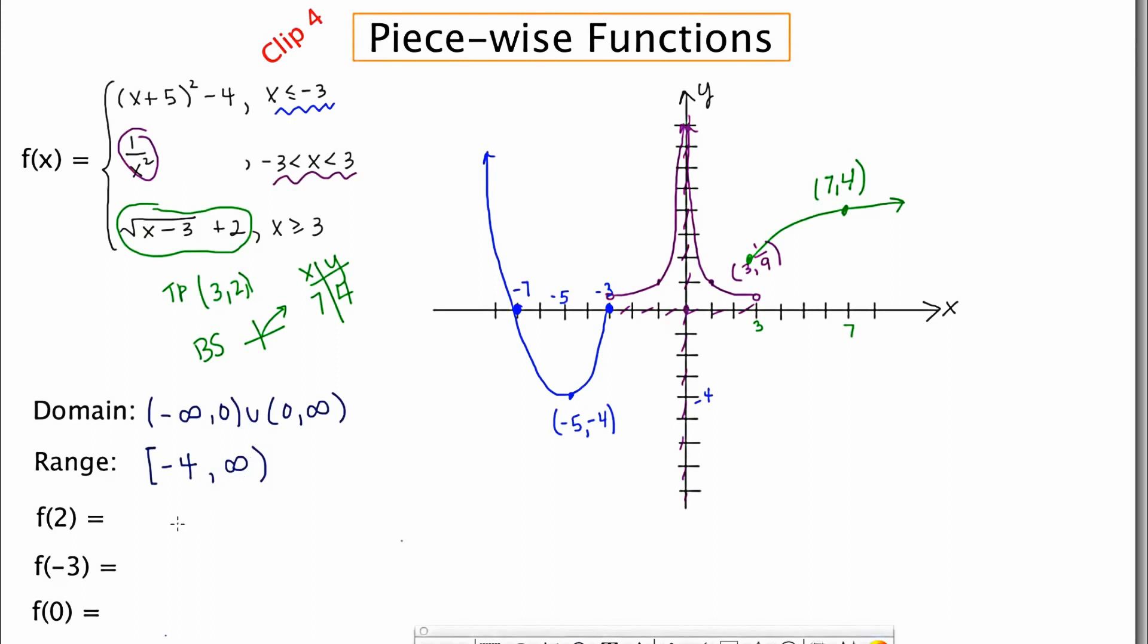Now to finish, we're going to evaluate the function at three different places, f of two. Now the confusion for piecewise functions is to figure out which piece to plug it into. To do that, you look at the restriction. Two falls between negative three and three. So I'm going to plug it in to this guy. One over two squared is one fourth. So the answer to this is one fourth. Negative three would fall into the first piece because that's where it's allowed to exist. Negative three plus five is two. Two squared is four. Four minus four is zero.